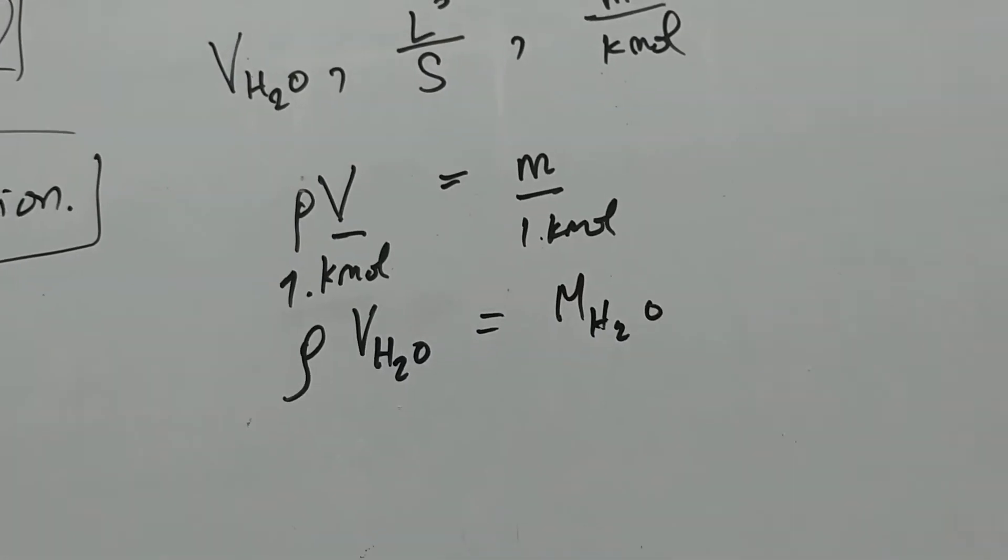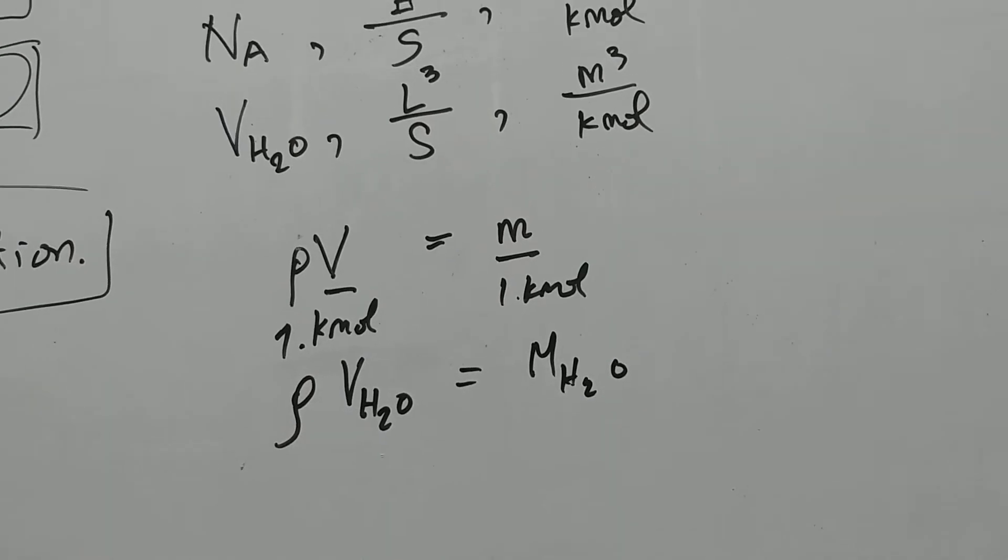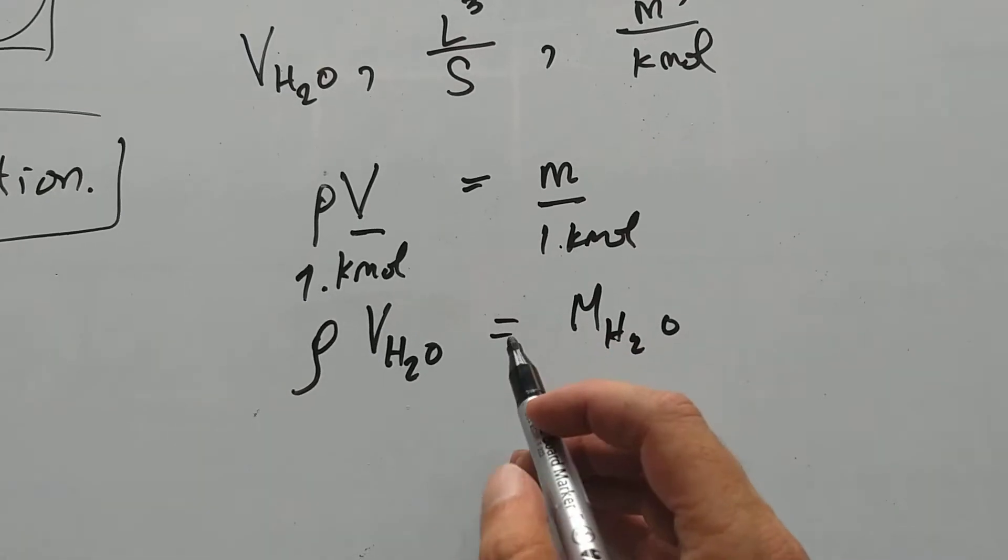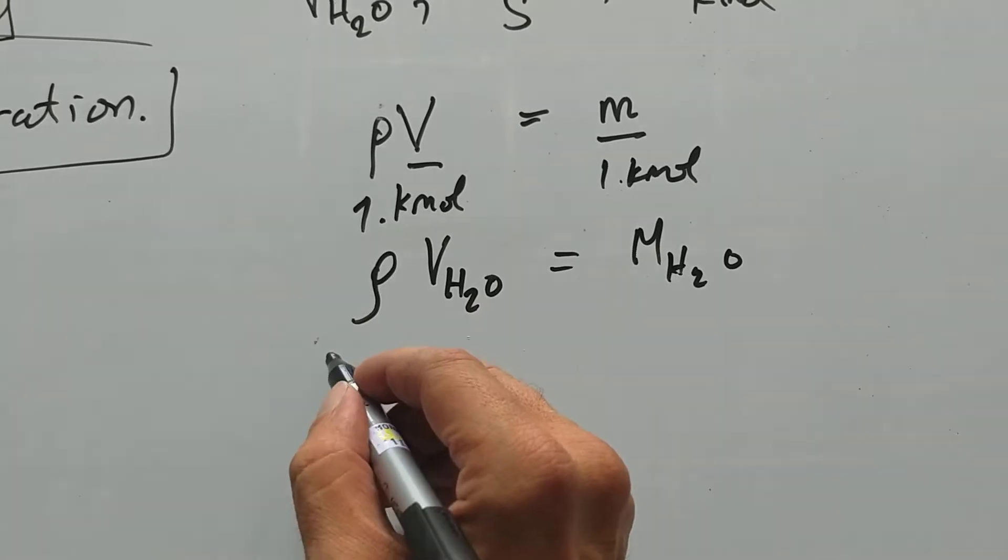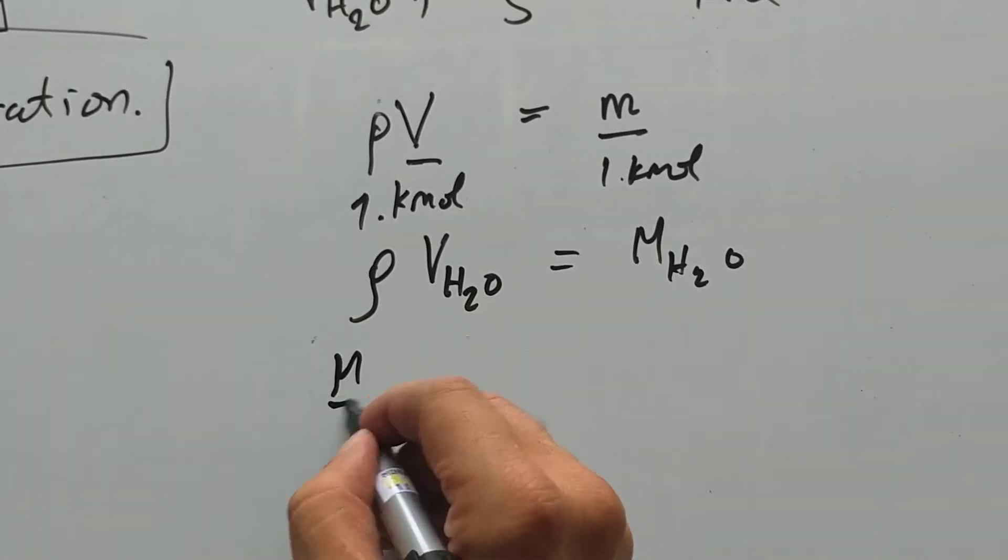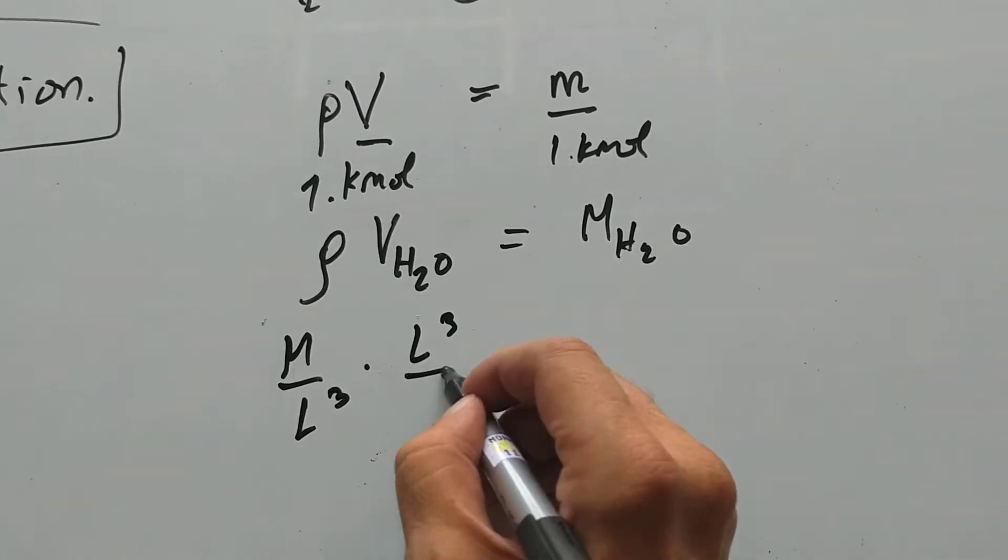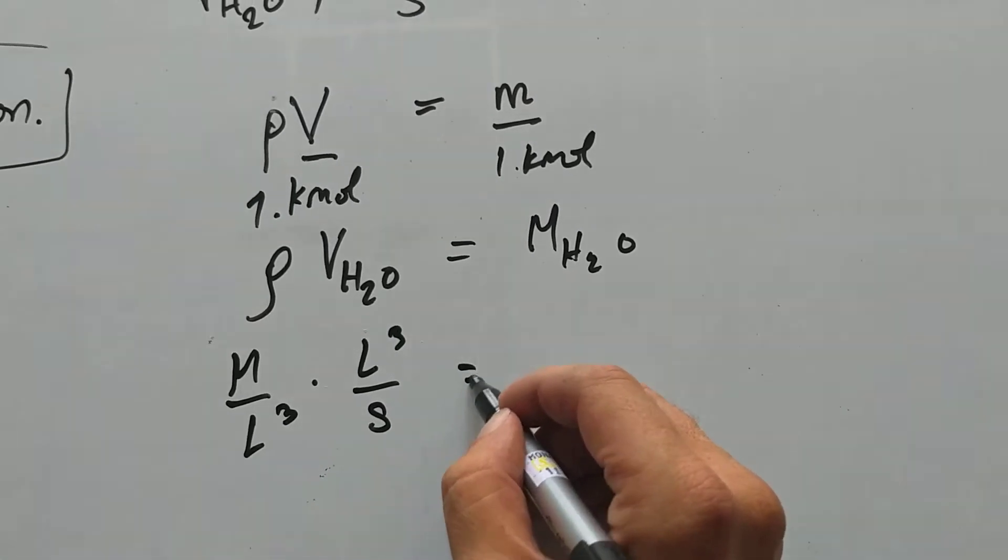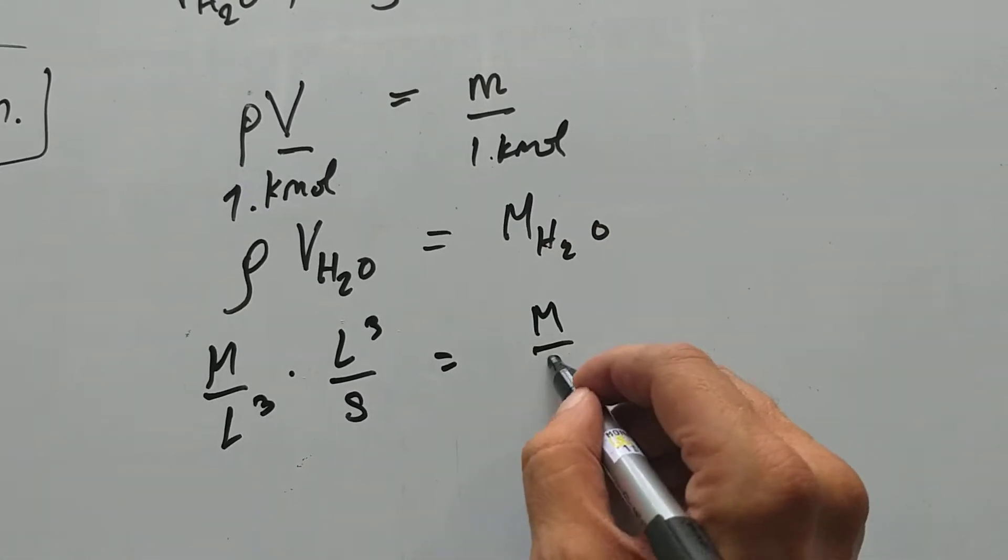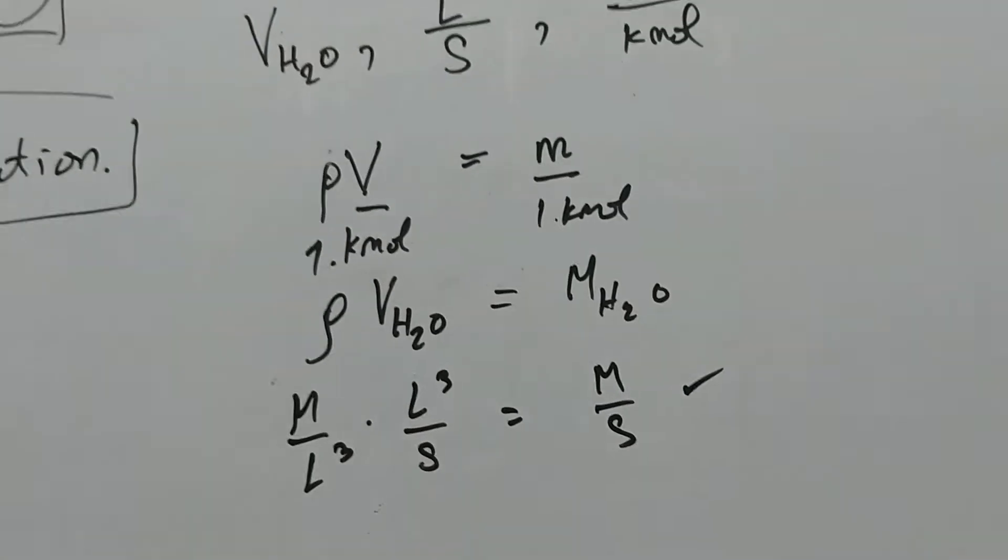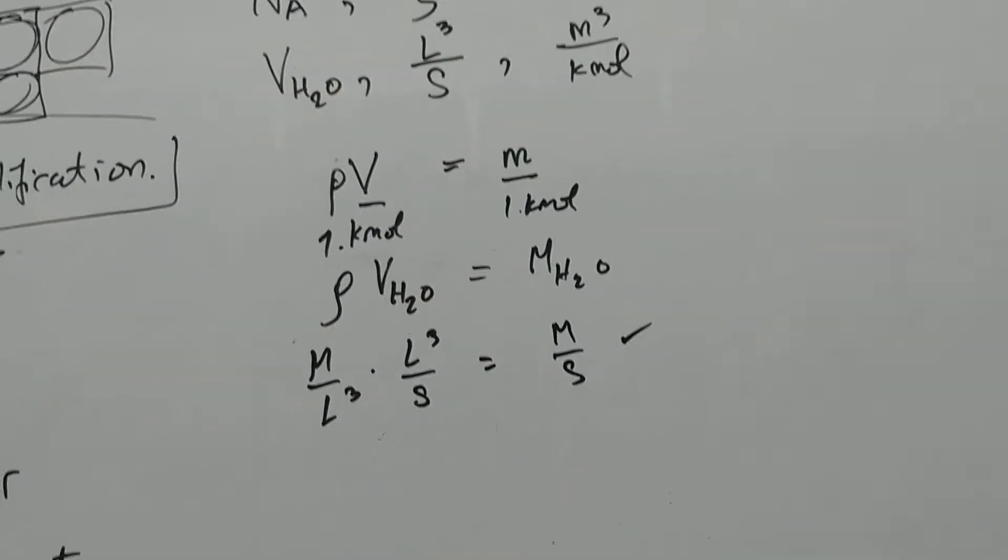You can check the dimensions of these things. This is mass per volume times volume per substance. And this thing is mass per substance. That's correct.